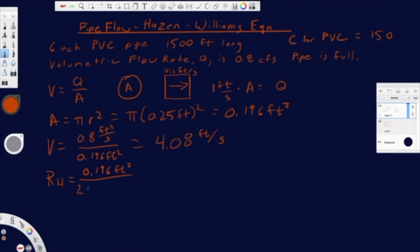So we're going to have 2 pi r, which is a quarter of a foot. And that is going to be 0.125 foot. So that's our hydraulic radius.